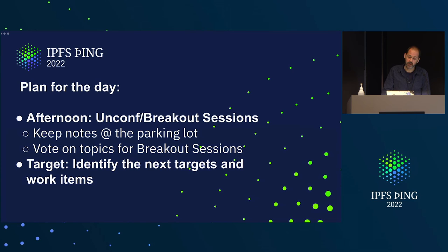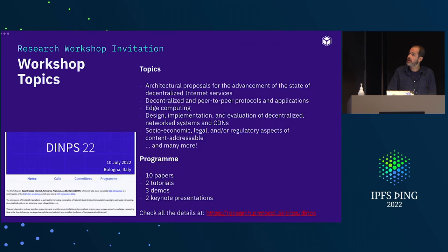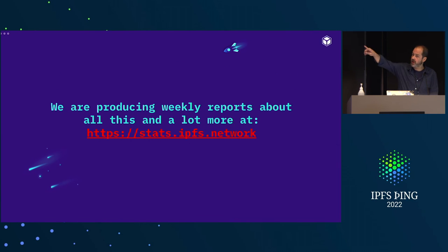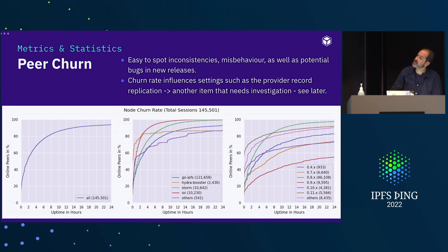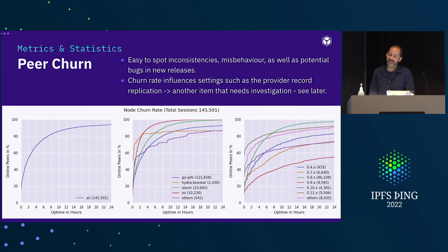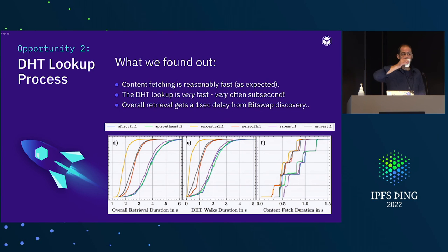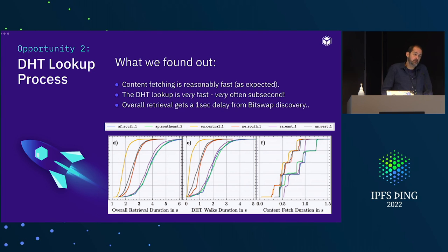Question from the audience: could you review the figures regarding peer churn by agent version? Also, do the DHT lookup measurements go through the Hydra nodes? Yes, the Hydra nodes were there — we didn't isolate them or turn them off, so they are part of the network and included in these results.